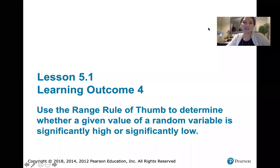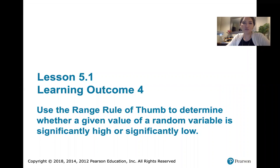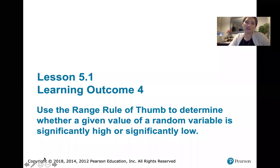In this video we discuss learning outcome number four from lesson 5.1. We're asked to use the range rule of thumb to determine whether a given value of a random variable is significantly high or significantly low.